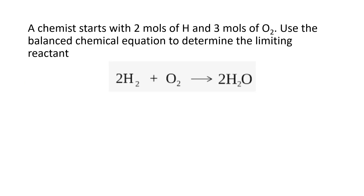A chemist starts with two moles of hydrogen and three moles of oxygen. Use the balanced equation to determine the limiting reactant. Remember, if you're not asked for grams, you can just go to moles. If you get to moles for both reactants, you can figure out which one is the limiting reactant.